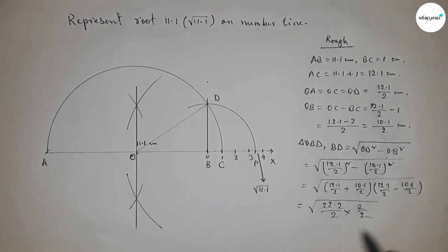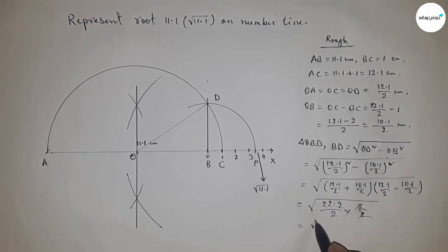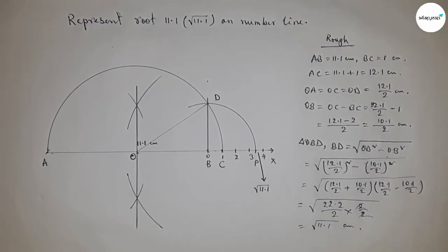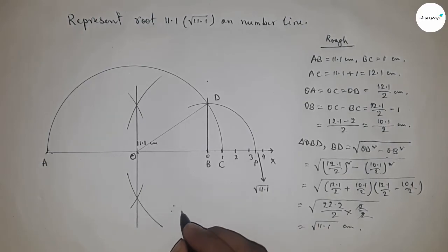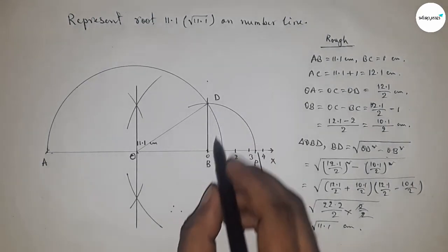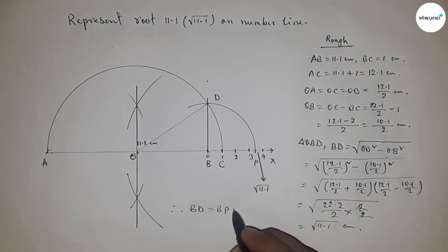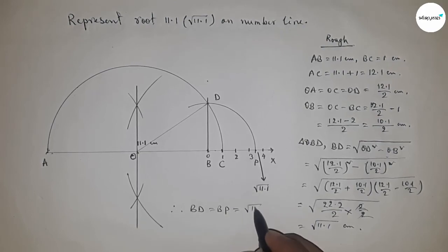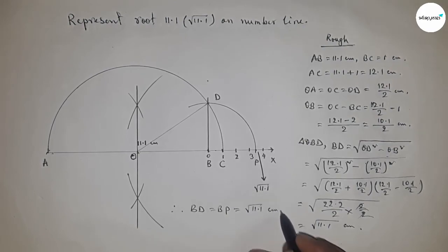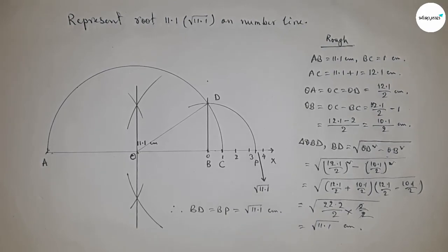Simplifying: this gives 22.2 divided by 2 multiplied by 2 divided by 2, which equals 11.1. Therefore, distance BD equals BP equals root 11.1 centimeters. That's all — thanks for watching! Please subscribe, like, and comment.